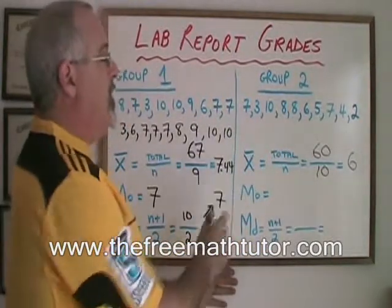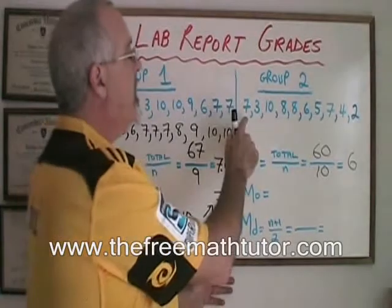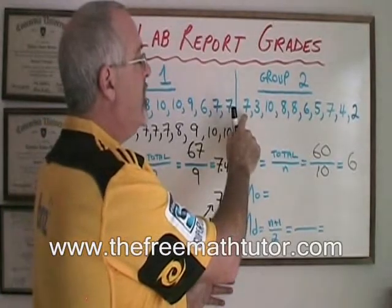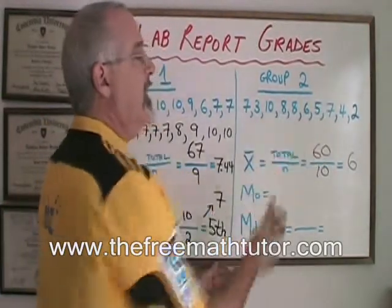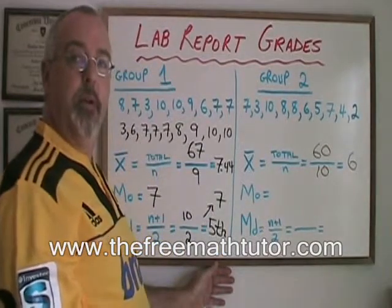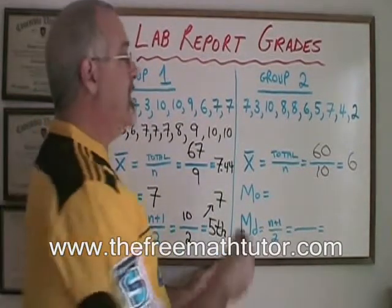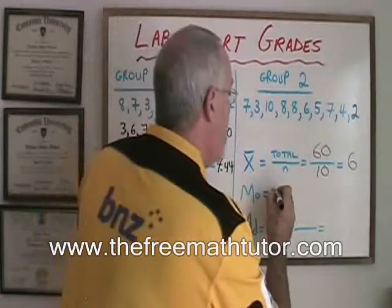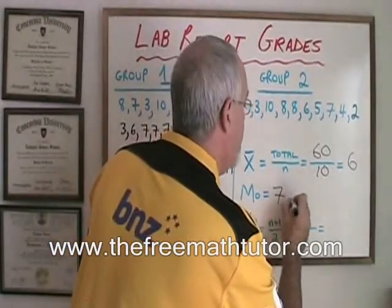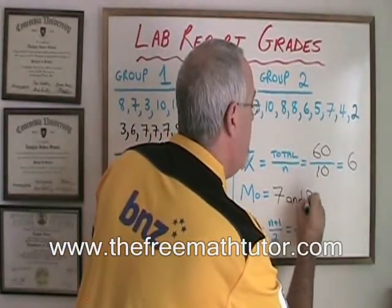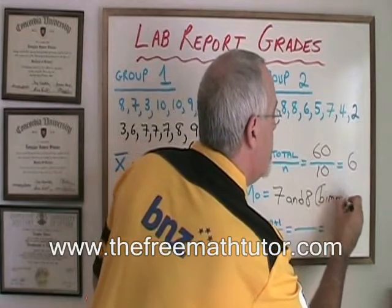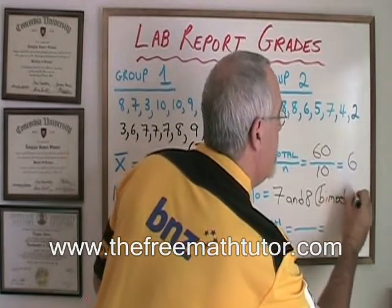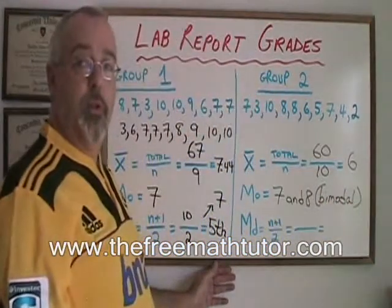The mode in this case: we have two 7s and we have two 8s, and we don't have any other mark that appears more often than twice. So we have two modes this time. Our mode is 7 and 8, and that means that this distribution is what we call bimodal.